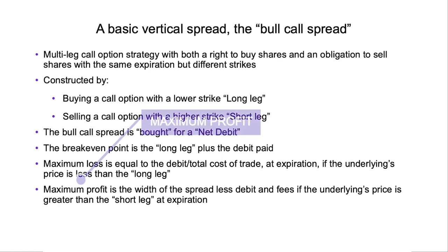The maximum profit is going to be the width of the spread — that's the difference between the long leg and the short leg — minus the debit, meaning minus what we paid for it. This occurs if the underlying price is greater than the short leg at expiration. If it's greater than the short leg at expiration, we're going to be buying shares and then obligated to sell those shares at a higher price, allowing us to experience our maximum gain. If you're not visualizing this yet, stay tuned because that's what we're going to get into next.